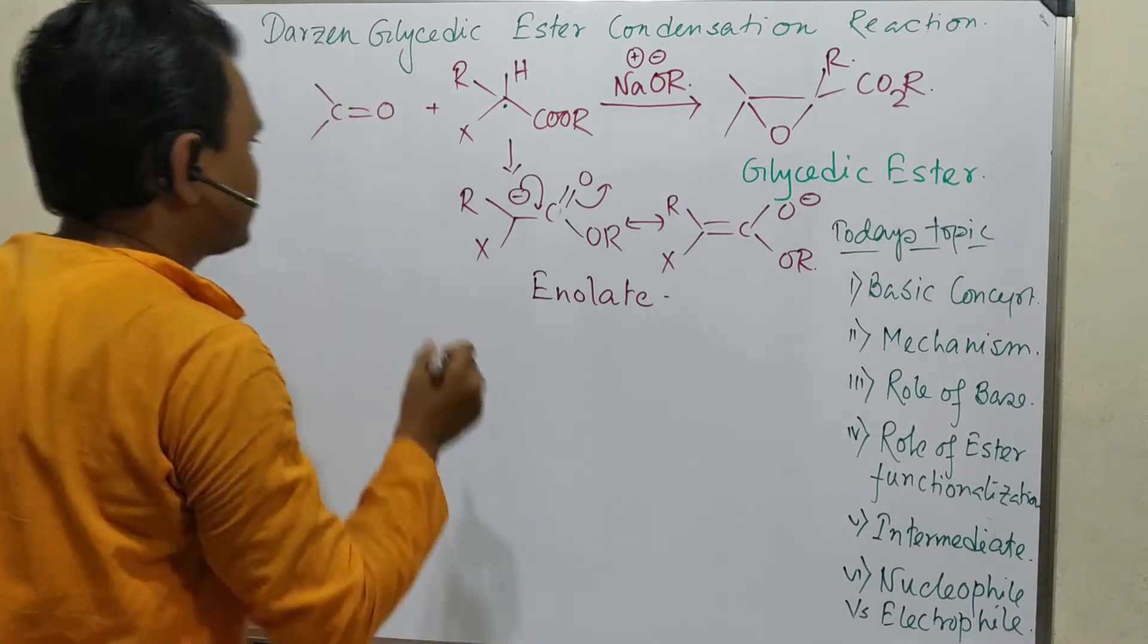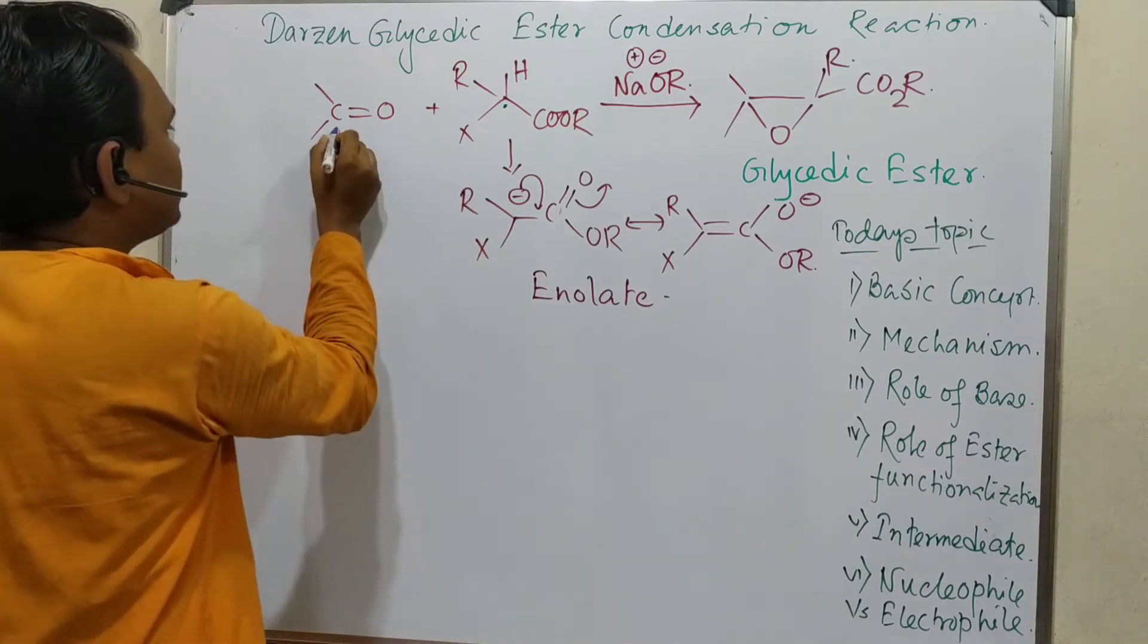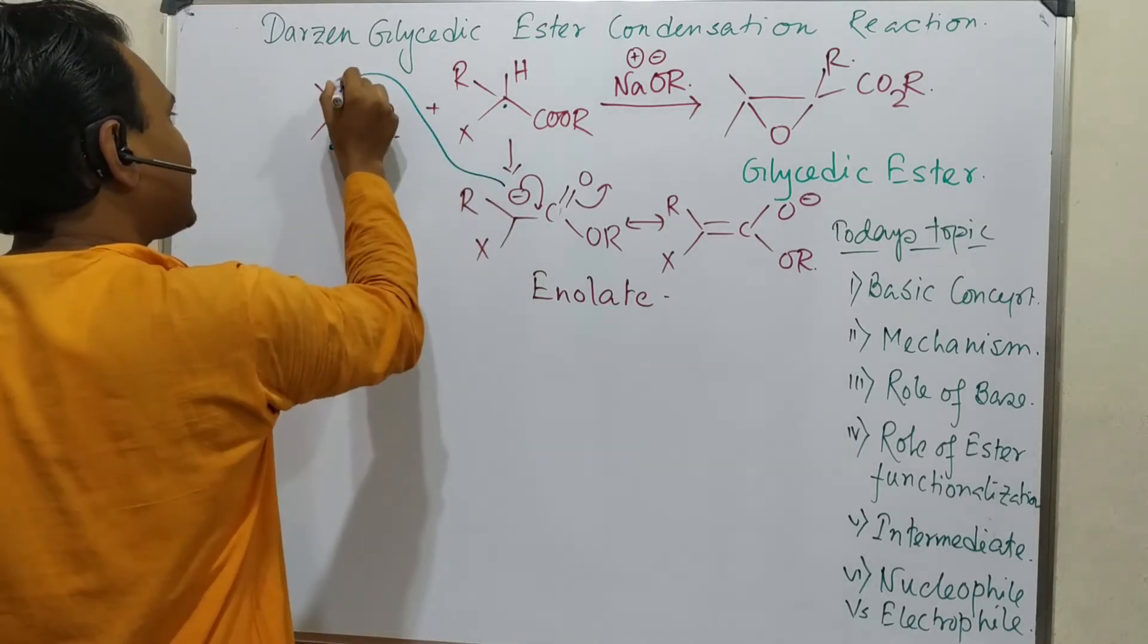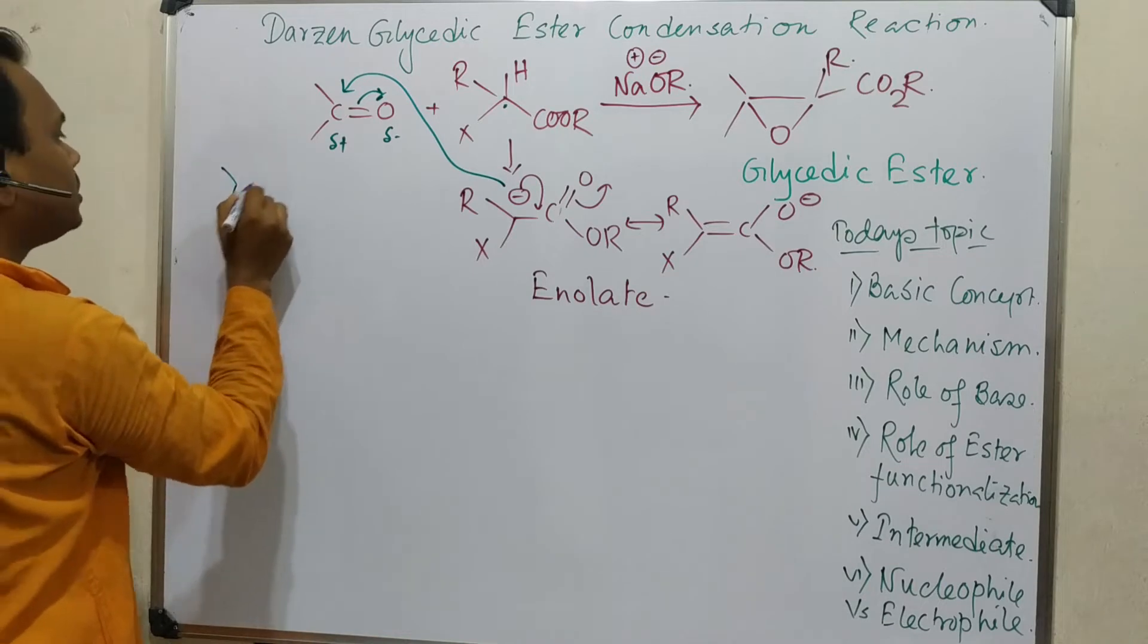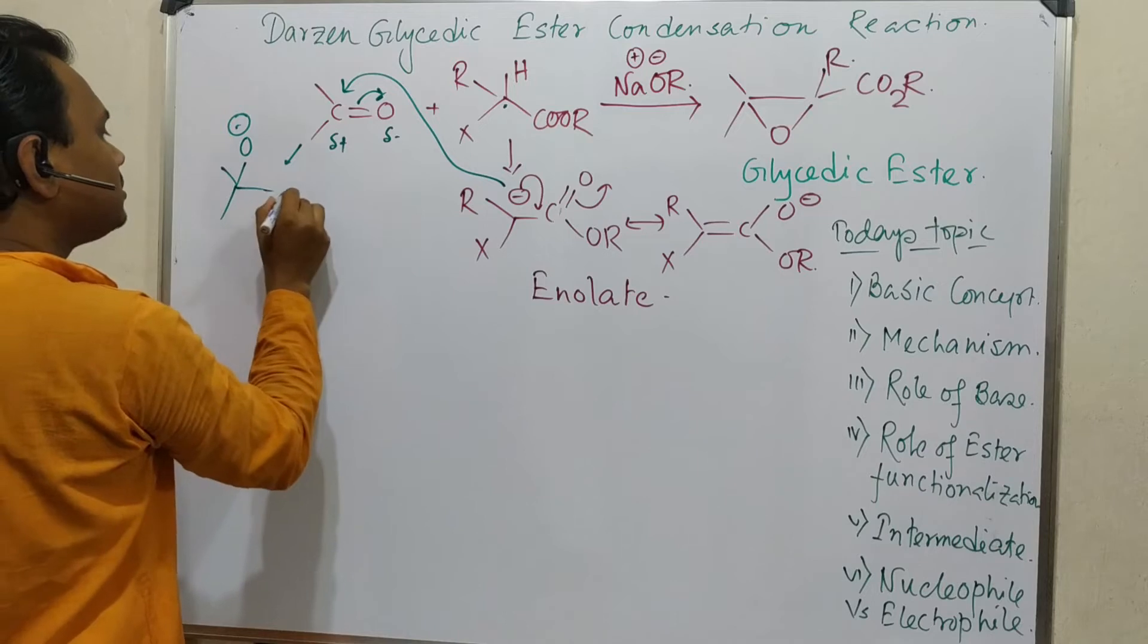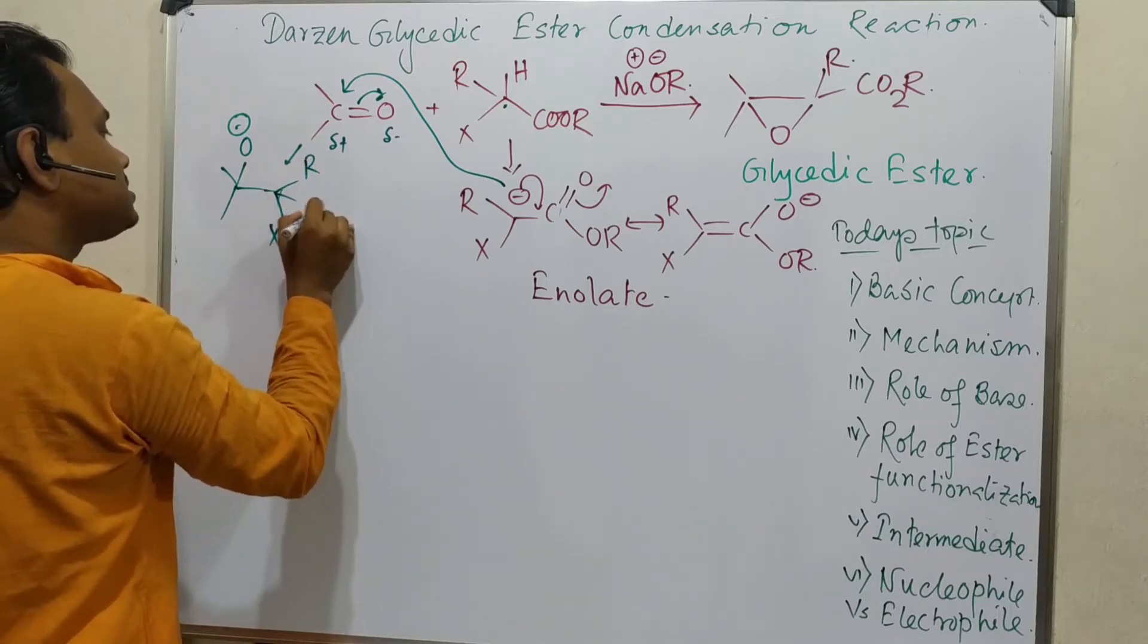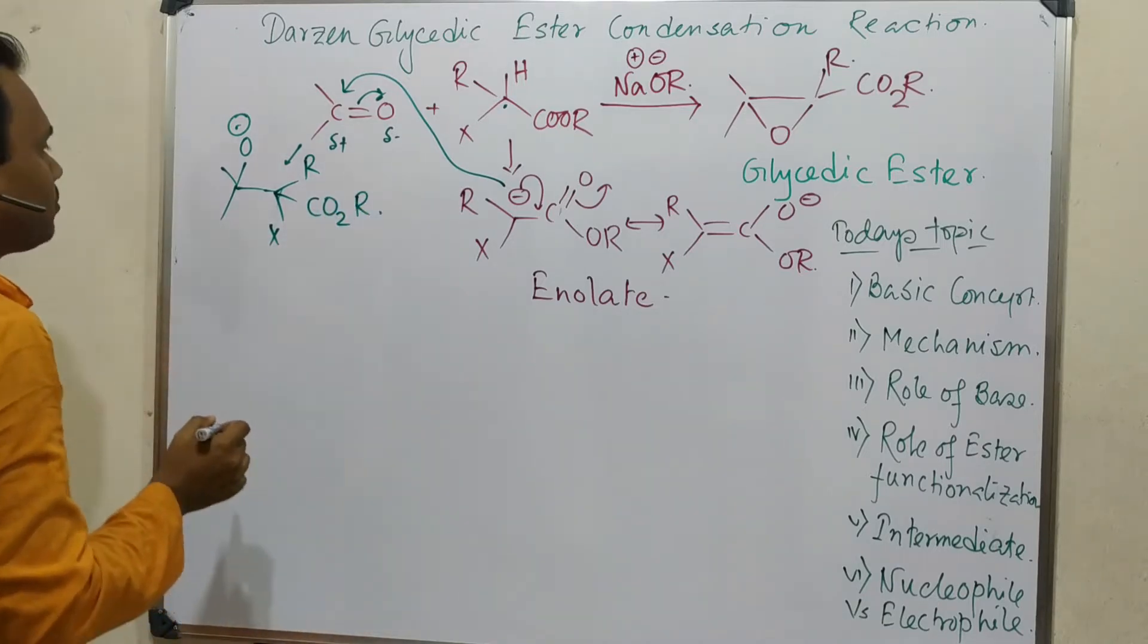I will explain the difference. So next step, this carbanion attacks the carbonyl carbon. We know this is delta negative, this is delta positive - this carbonyl carbon is electron deficient so it attacks here. It opens, similar like Claisen. So it produces ultimately O- minus, X, R, and CO2R.